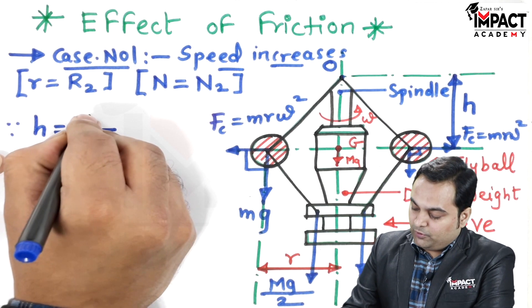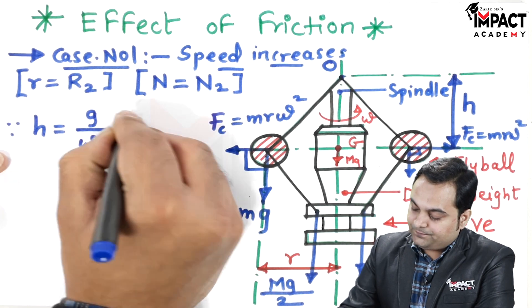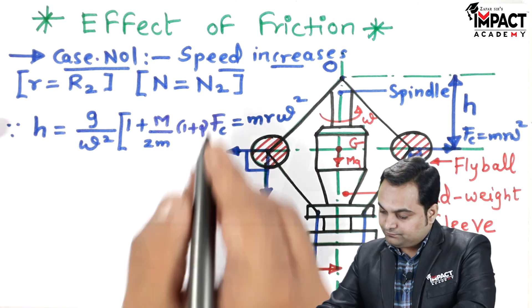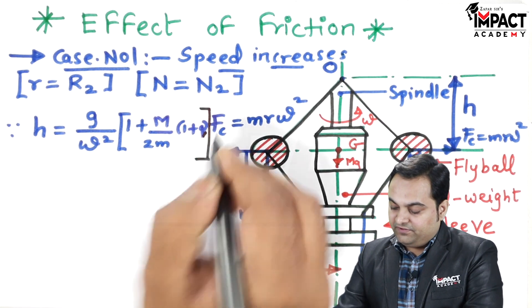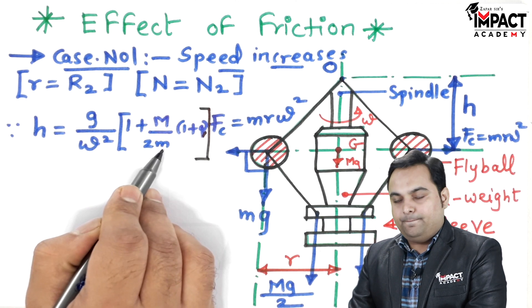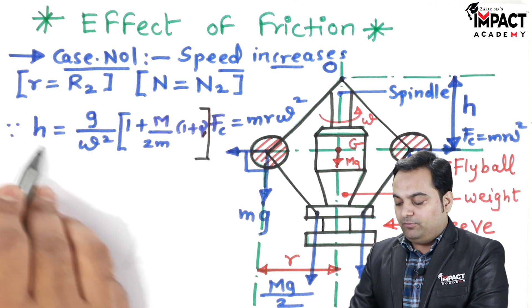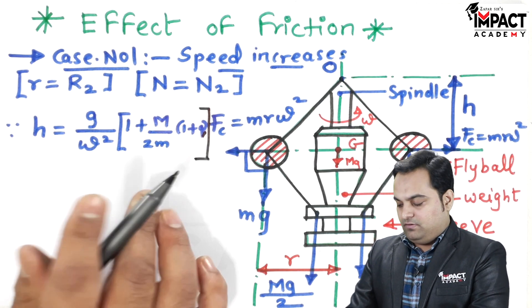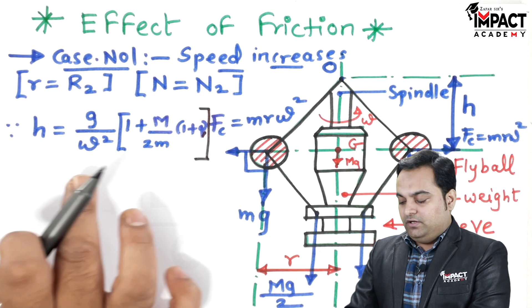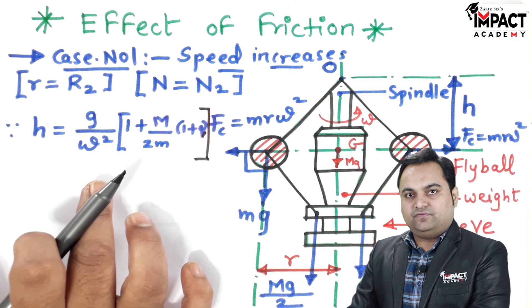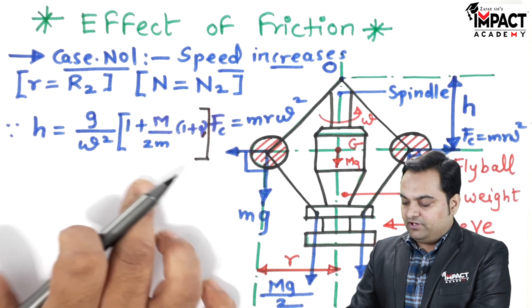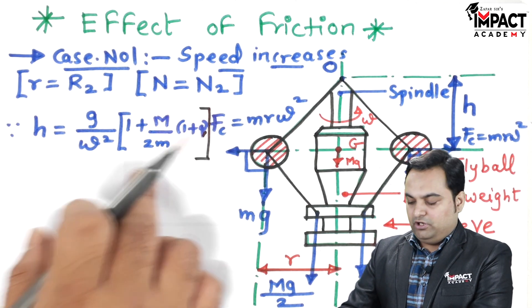The full formula is h = (g/ω²) × (1 + (capital M / 2m)) × (1 + Q). The derivation of this formula is covered in my previous video, the link of which is provided in the description below. Here I am multiplying with g to convert mass into weight for capital M and small m.